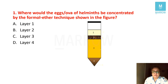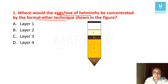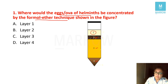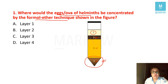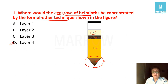Our first question: where would the eggs or ova of helminths be concentrated by the formal-ether technique shown in the figure? We have been marked out layer one, layer two, layer three, and layer four. The formal-ether technique is a sedimentation technique. In sedimentation technique, all the eggs, oocysts, and ova will be concentrated in the lowermost layer. So the answer is layer four.